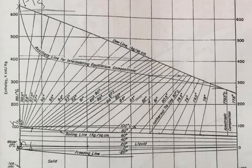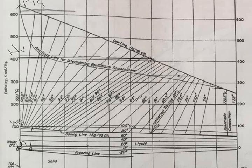For the vapor stream leaving the top stage, it is a saturated vapor falling on the dew line at a weight fraction of 0.6. Going to x = 0.6 on the dew line gives approximately 410 kcal/kg — this is H_V. For the reflux and distillate streams, they both have the same enthalpy value since they are the same stream just split. The distillate is 60% ethanol and the reflux is a saturated liquid, so going to x = 0.6 on the bubble line gives H_D = H_L of about 60 kcal/kg.